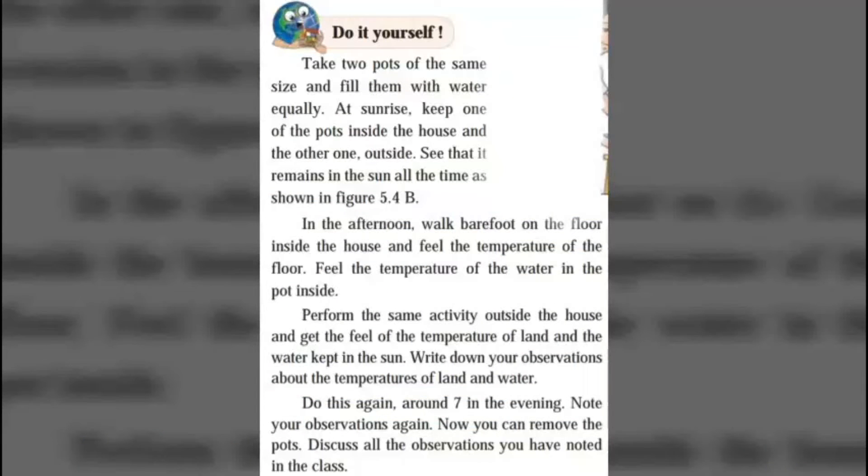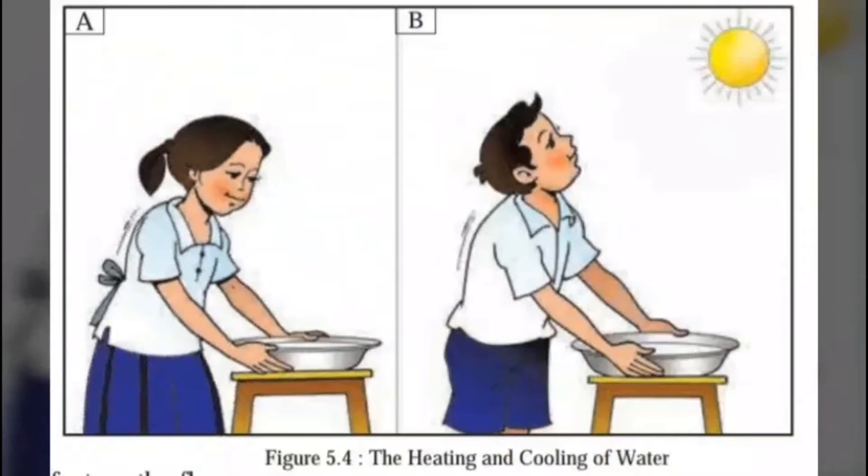Let us perform an experiment to see that there is a difference in the heating and cooling of land and water. Do it yourself. Take two pots of the same size and fill them with water equally. At sunrise, keep one of the pots inside the house and the other one outside. See that it remains in the sun all the time as shown in figure 5.4b. In the afternoon, walk barefoot on the floor inside the house and feel the temperature of the floor. Feel the temperature of the water in the pot inside. Perform the same activity outside the house and get the feel of the temperature of land and the water kept in the sun. Write down your observation about the temperatures of land and water.